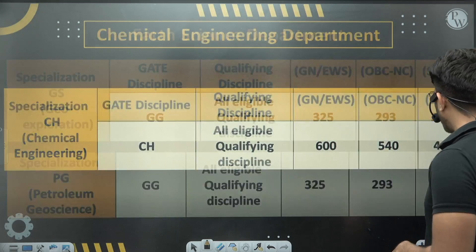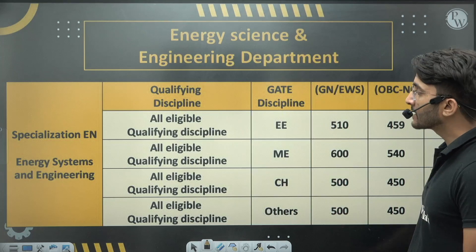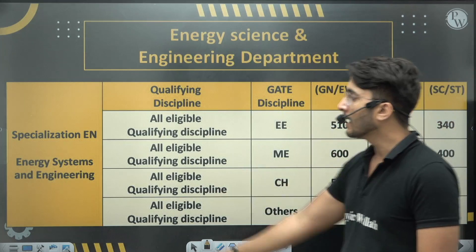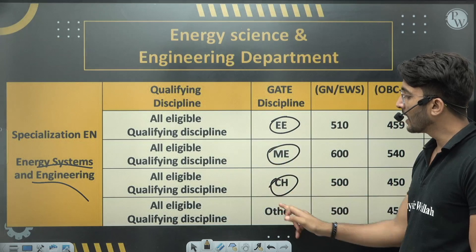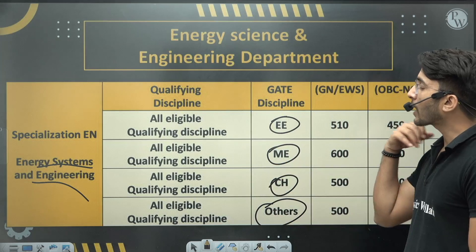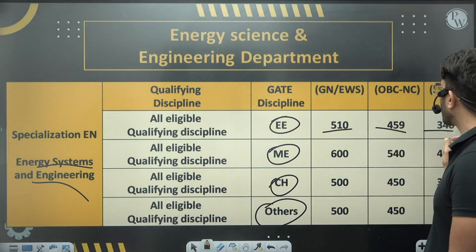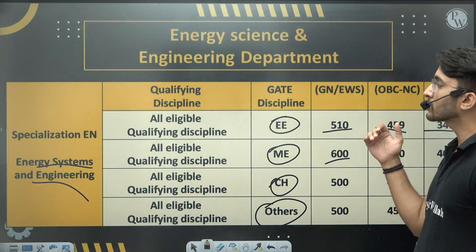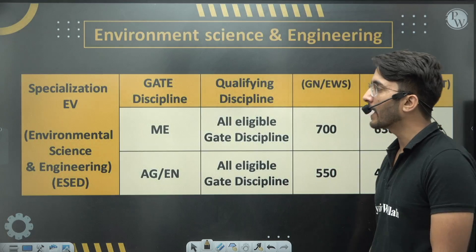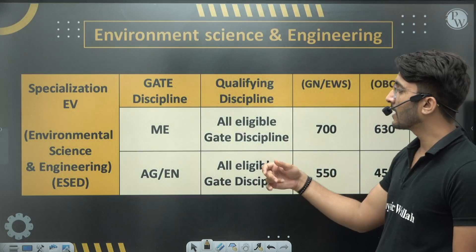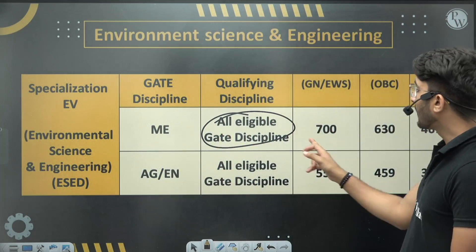Chemical Engineering students have an M.Tech specialization available with GATE scores mentioned in the PDF. For interdisciplinary courses like Energy Systems and Engineering, Electrical, Mechanical, Chemical, and other branch students are eligible. Set your target accordingly — if your GATE score exceeds the cutoff, you can expect a call from IIT Bombay.